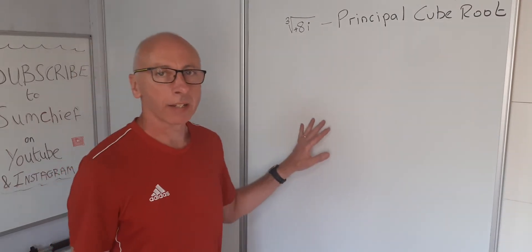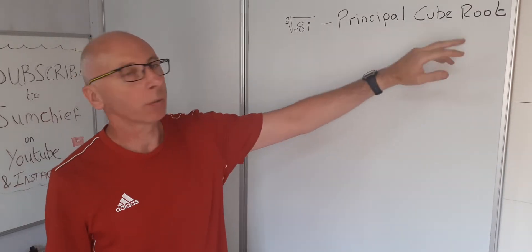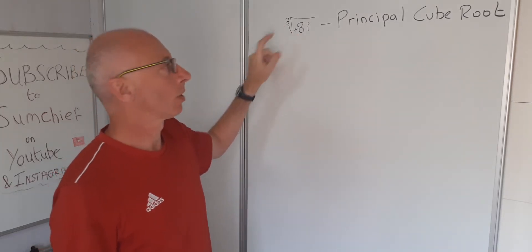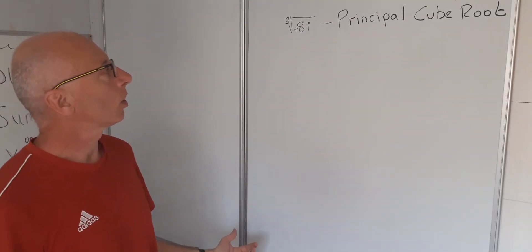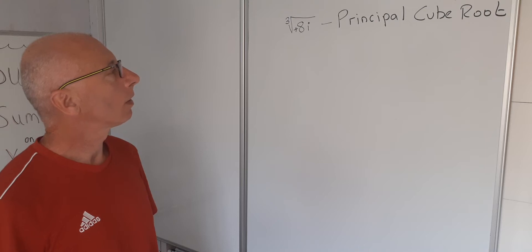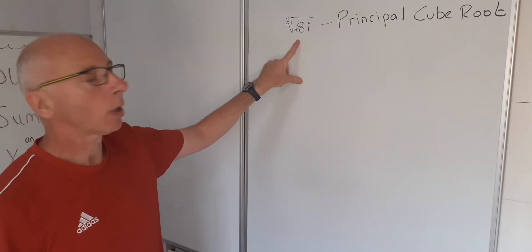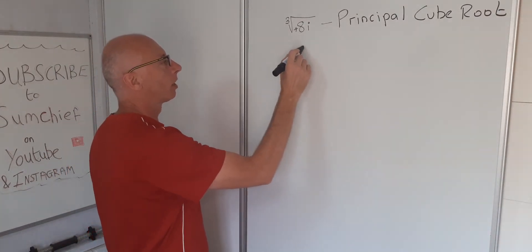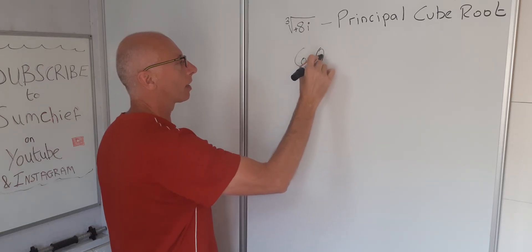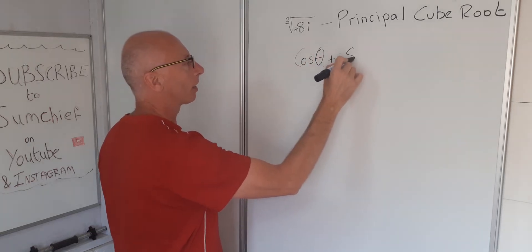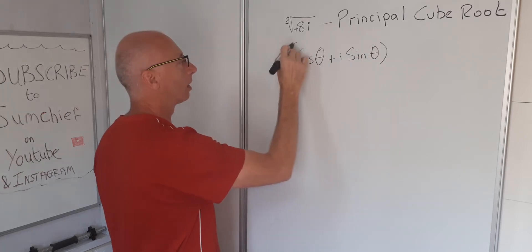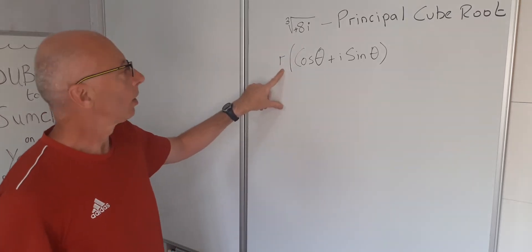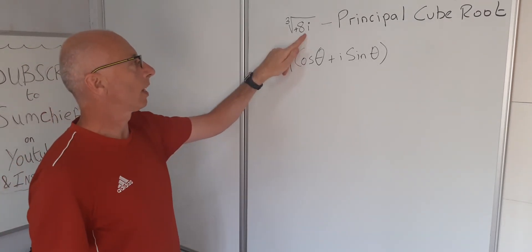We're going to look at some complex analysis and find the principal cube root of positive 8i. How do we go about finding the cube root of 8i? Well, the first thing we can do is quote Euler's formula. Euler's formula tells us that we have cosine theta plus i sine theta, multiplied by the modulus of our point. Our point here is 8i.